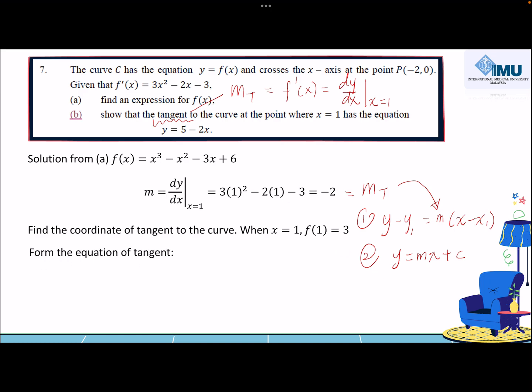Now, once you have complete information, you can proceed to find the equation of tangent, evaluate accordingly, and rearrange your final equation. You will obtain y = 5 - 2x. Now, this is proving the question 7b.